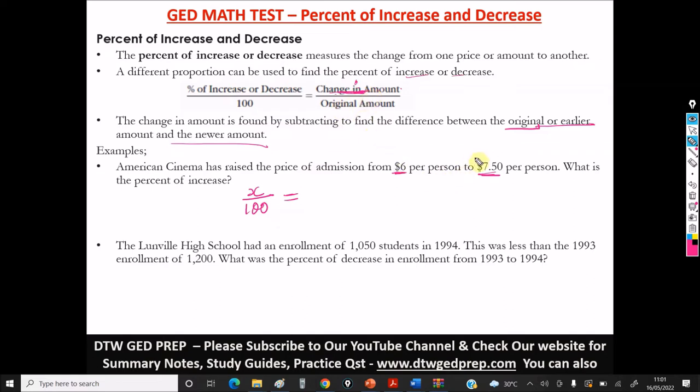Now, the change in amount is the difference between the original amount and the newer amount. And the difference is the $7.50 minus what, $6 over our original amount is what, $6.00.